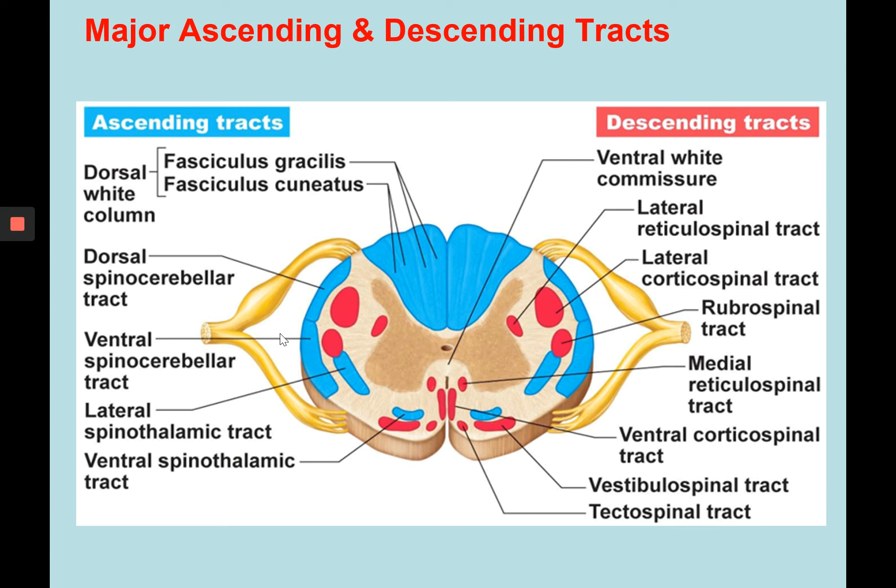Here we can see the symmetry that ascending and descending tracts have on each side of the spinal cord. Terms like lateral reticulospinal tract, ventral white commissural fissure, and lateral spinal thalamic tract — be familiar with them as parts of the white columns or gray matter of the spinal cord.